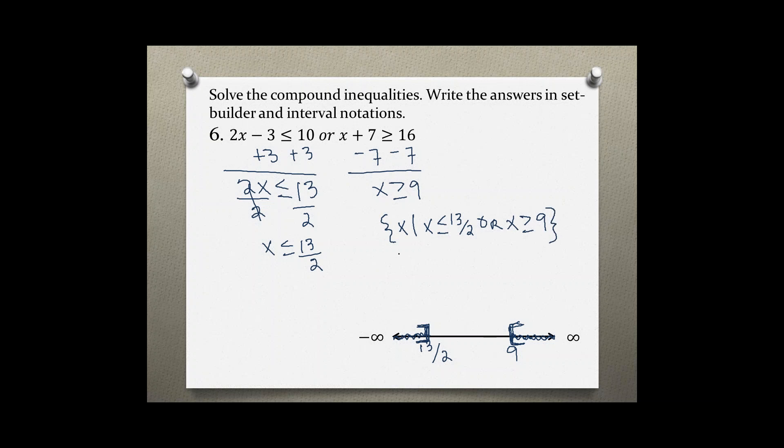And in interval notation, we'll start with negative infinity to 13 divided by 2, bracket, and just write the union of bracket 9 comma positive infinity. And we always use parentheses, whether it's negative or positive infinity.